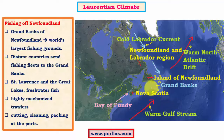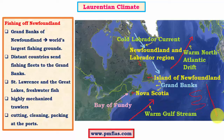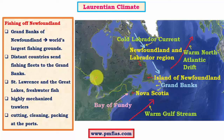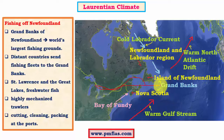The ports here are of natural types due to the indented coastline, making port construction easy compared to straight coastlines. These ports are used for all kinds of fish processing activities — cleaning, cutting, and packing — before export to the rest of the world. The St. Lawrence waterway connects the Great Lakes region to the Atlantic Ocean, allowing transportation of both freshwater fish from the Great Lakes and ocean fish resources to the interiors and other parts of the world.